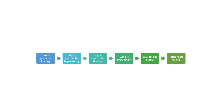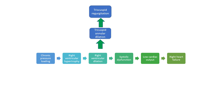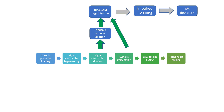This flowchart shows how chronic pressure loading leads to right ventricular hypertrophy, right ventricular dilation, systolic dysfunction, low cardiac output, and eventually right heart failure. The right ventricular dilation also leads to tricuspid annular dilation, causing tricuspid regurgitation, and eventually resulting in impaired right ventricular filling and intraventricular septal deviation. Systolic dysfunction along with chronic pressure loading further leads to tricuspid regurgitation and impaired right ventricular filling.